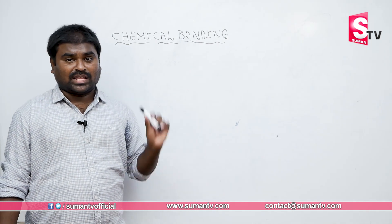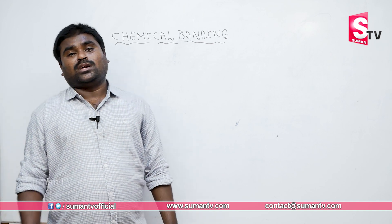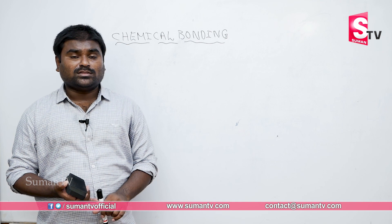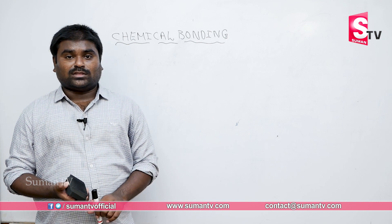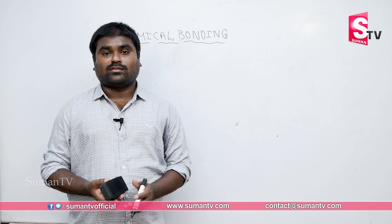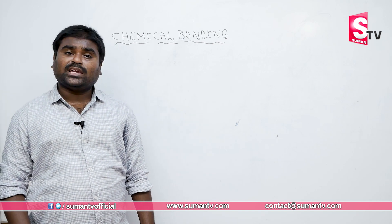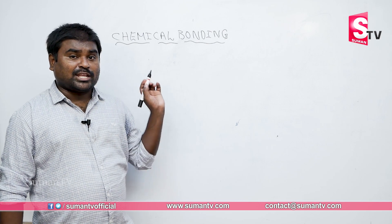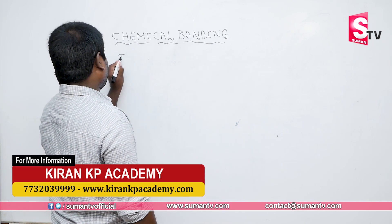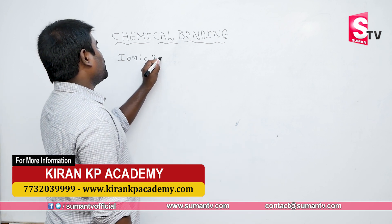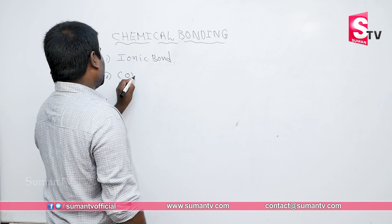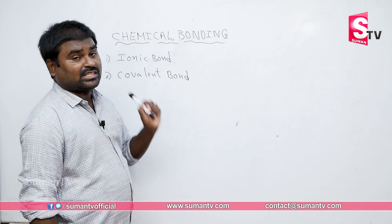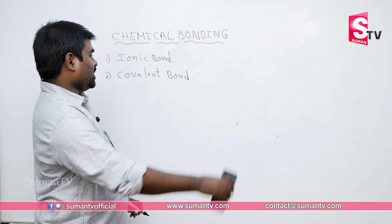When two or more elements come together to form a new substance, that brings us to the types of chemical bonding. Chemical bonding is divided into three types: ionic bond, covalent bond, and coordinate bond. In your textbook, only two bonds are given — ionic bond and covalent bond. Coordinate bond is covered in higher studies.